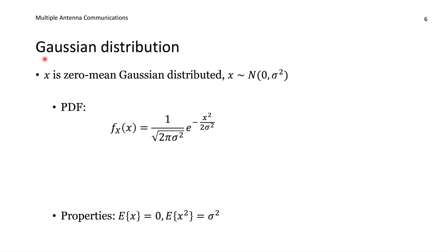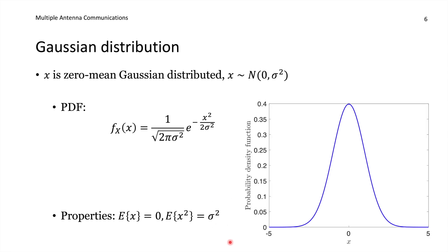One important example is the Gaussian distribution, also known as the normal distribution. It commonly appears when many sources of randomness work together, such as many electrons producing thermal noise. For a zero-mean Gaussian with variance sigma squared, we write x ~ N(0, sigma squared), and its PDF contains e to the power of minus x squared divided by twice the variance, with a normalizing scaling factor. The PDF is symmetric around zero with a bell shape.